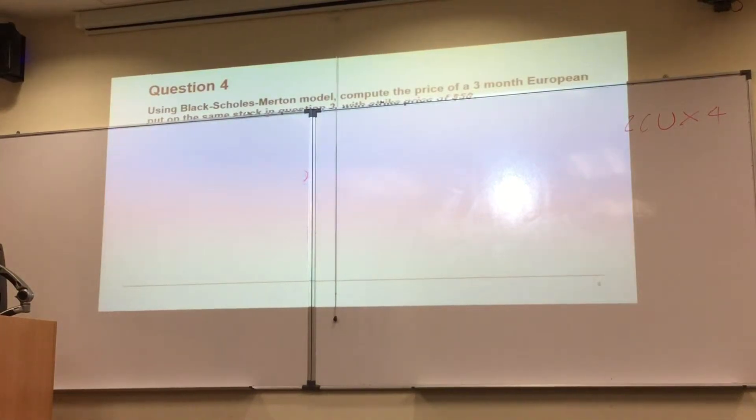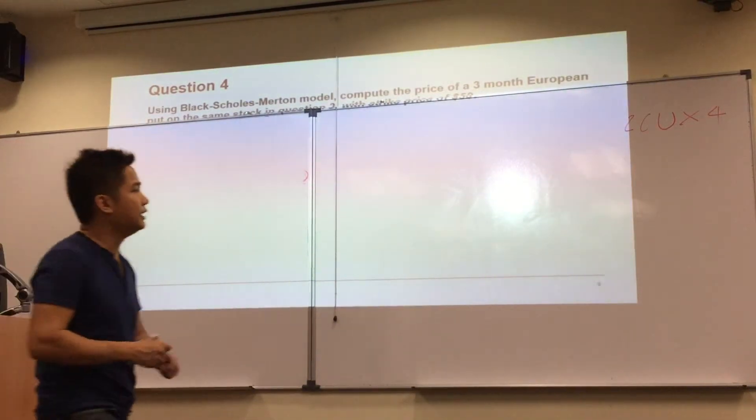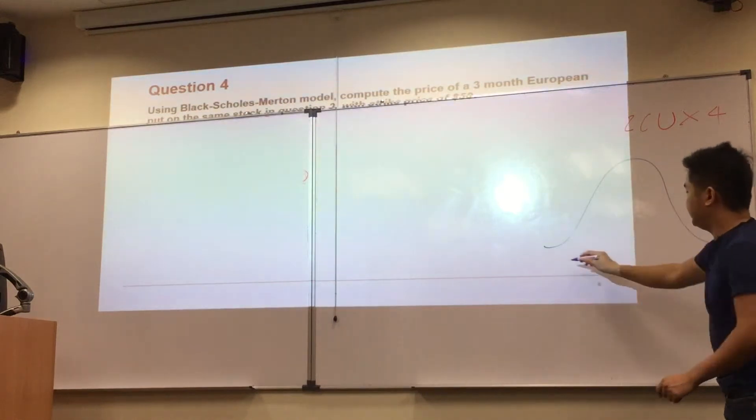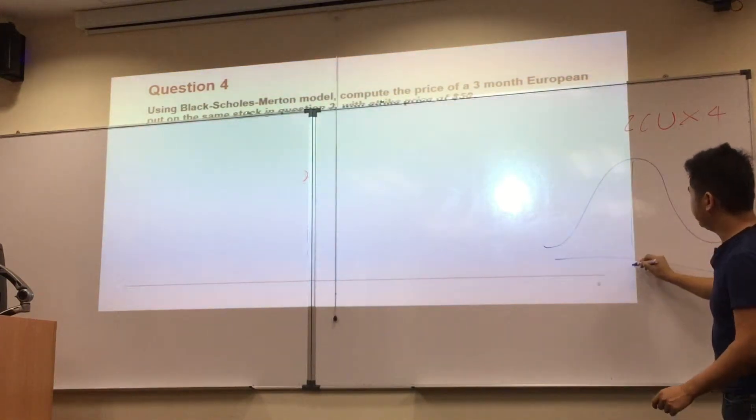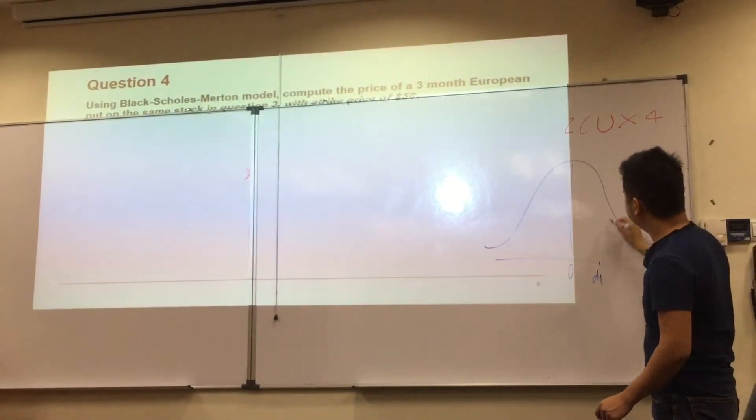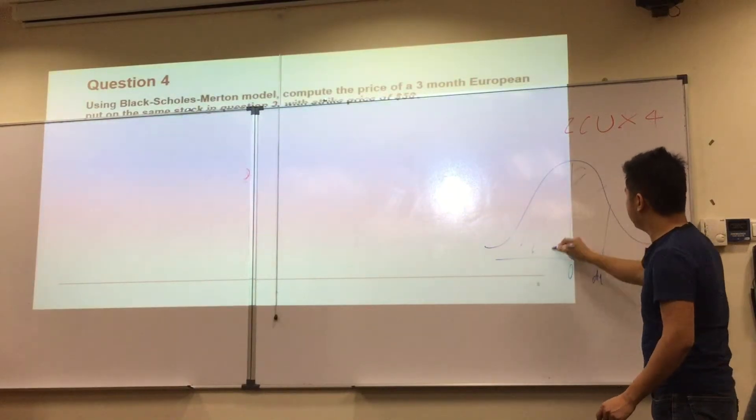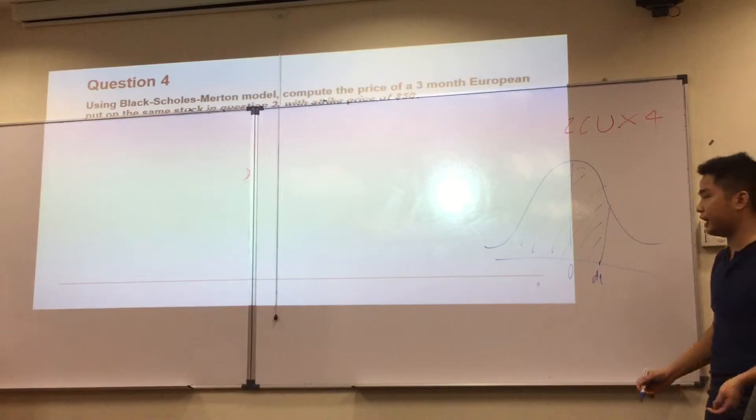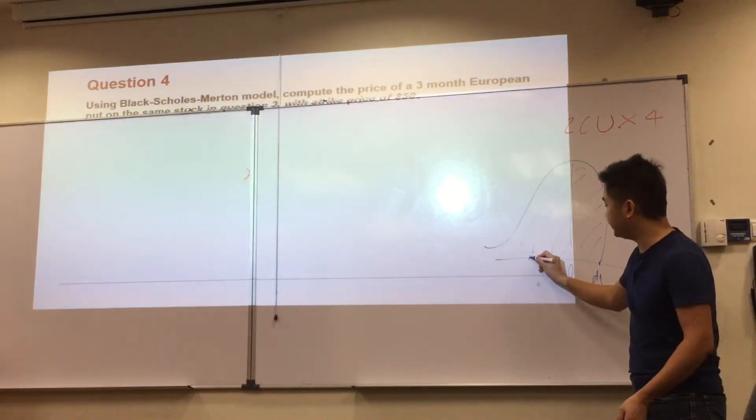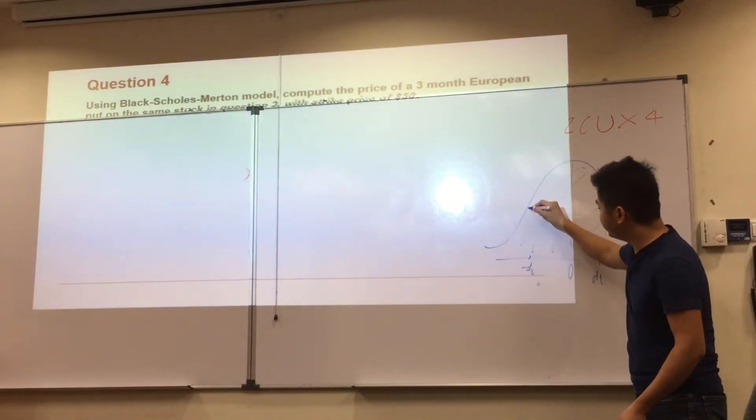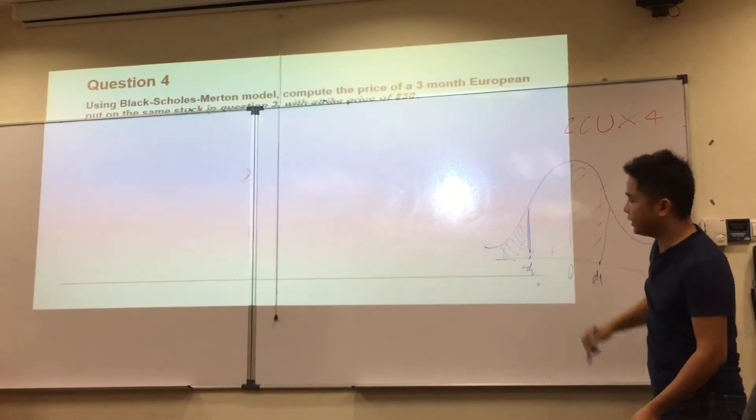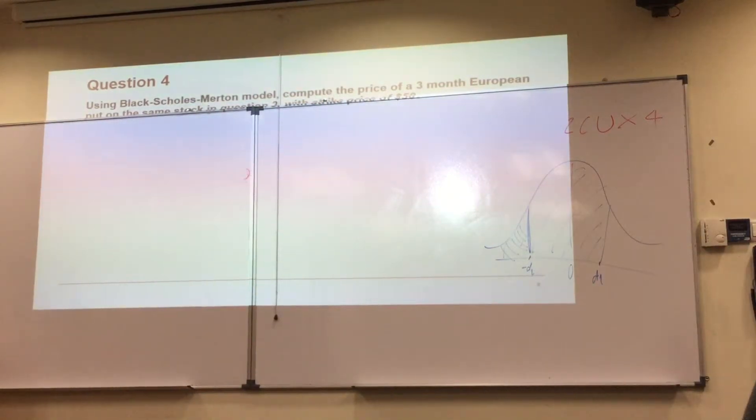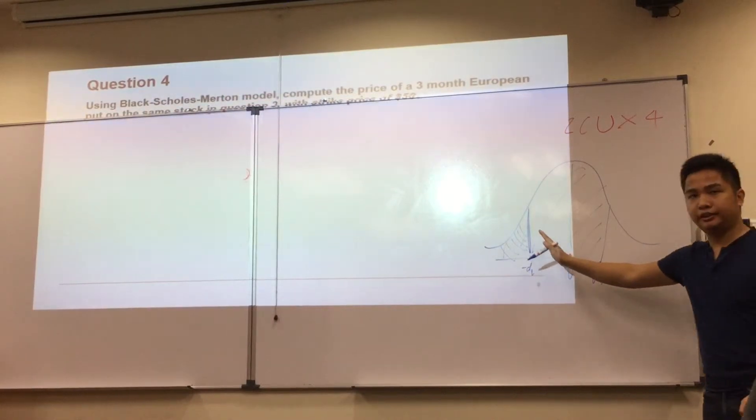Why is that? Remember, this is normal distribution. This is 0 and this is D1. So N of D1 will be this branch. If you want to calculate N of negative D1, let's say this is negative D1, right? So this is the area you're looking for. Because this is normal distribution, it's symmetric.